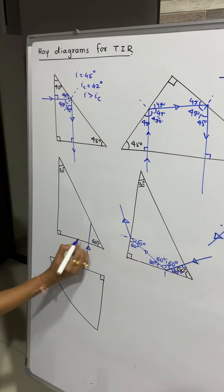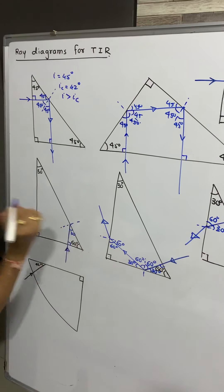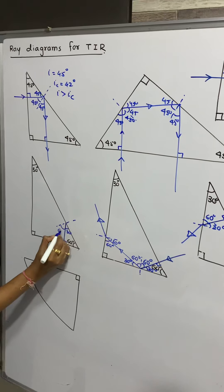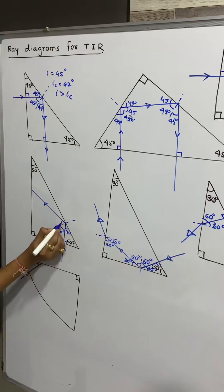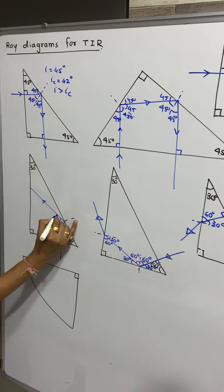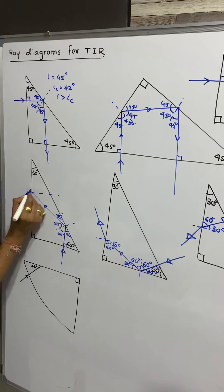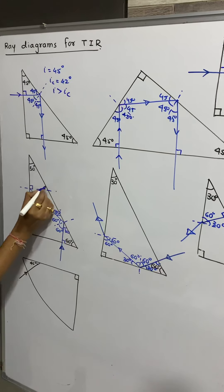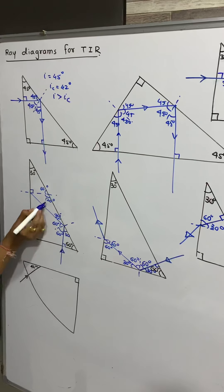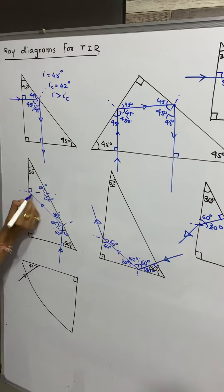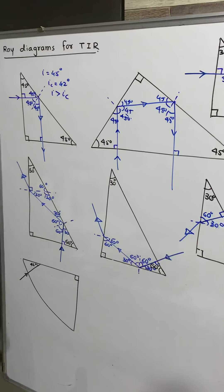Here also, this angle is 90 degrees, this is 30 degrees. I will draw the normal here — this is 60 degrees. The angle is more than the critical angle, therefore it will reflect like this. This angle is also 60 degrees, this is 30 degrees. I will draw the normal here. This is 90 degrees, this is 30, so this is 60 degrees. This has to be 120 degrees — 120 plus 30 is 150 — so this is 30 degrees, which is less than the critical angle. Therefore it will refract like this.